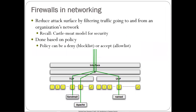Firewalls in the network layer are similar — they try to block traffic between two parts of the network. In authentication, we had the castle moat model for security, and the firewall implements that model. Certain traffic is just not going to be allowed through the firewall based on a policy the administrator sets. There are two ways to identify a policy: a block list, where you explicitly list all traffic you don't want, or an allow list, where you only allow certain traffic and everything else is blocked by default.